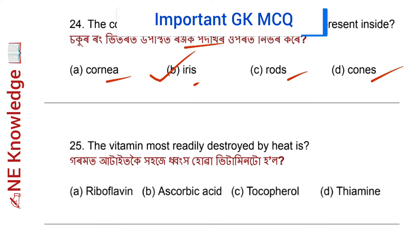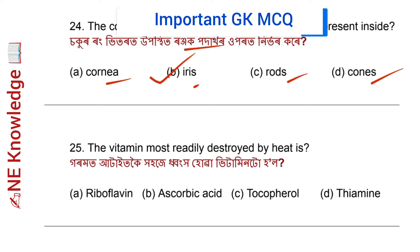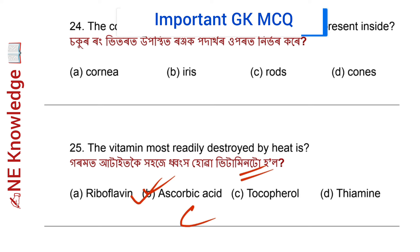Question number 25: Which vitamin is known as Ascorbic Acid? Options include Ascorbic Acid, Tocopherol, and Thymine. Correct answer: Option B — Ascorbic Acid is Vitamin C. Vitamin C can reduce skin-related disorders.